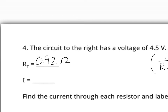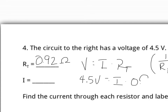That allows us to calculate current, similarly as before using V equals I times R, where R is the total resistance. We know there are 4.5 volts present, and we have 0.92 ohms of resistance, giving us a total current of 4.89 amps.